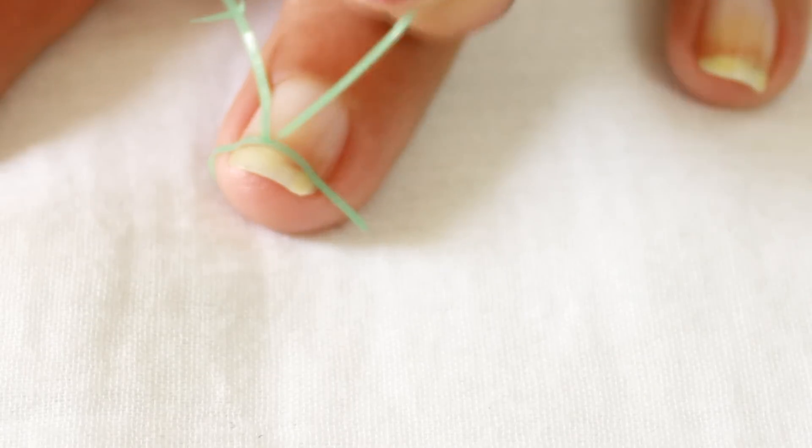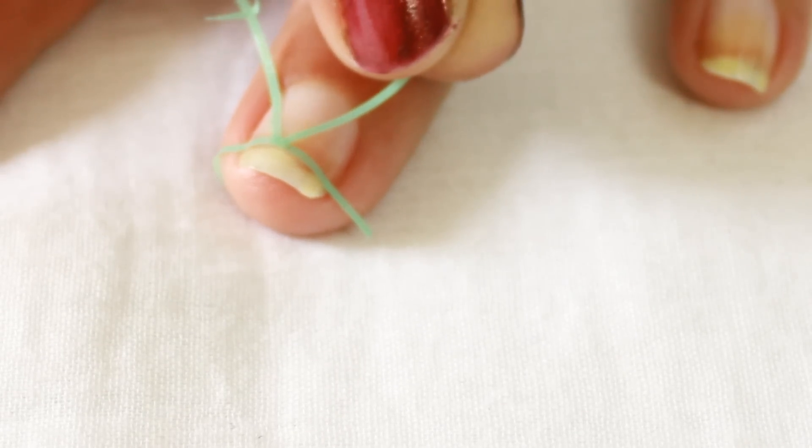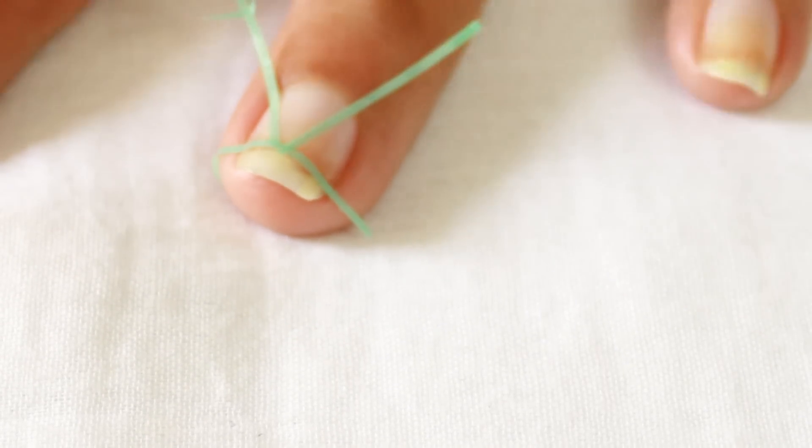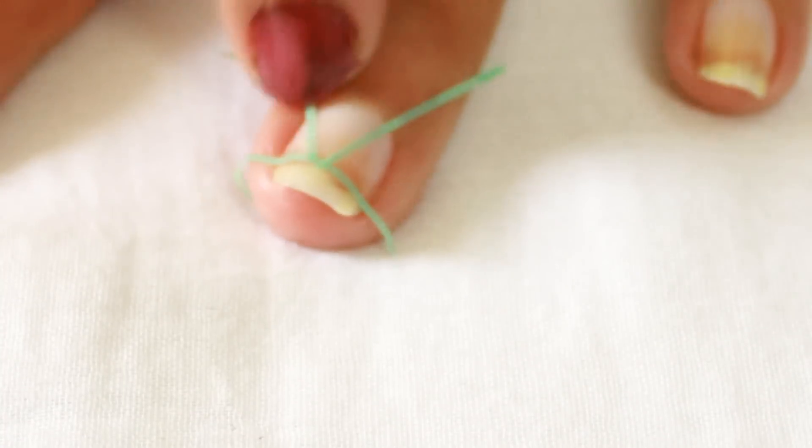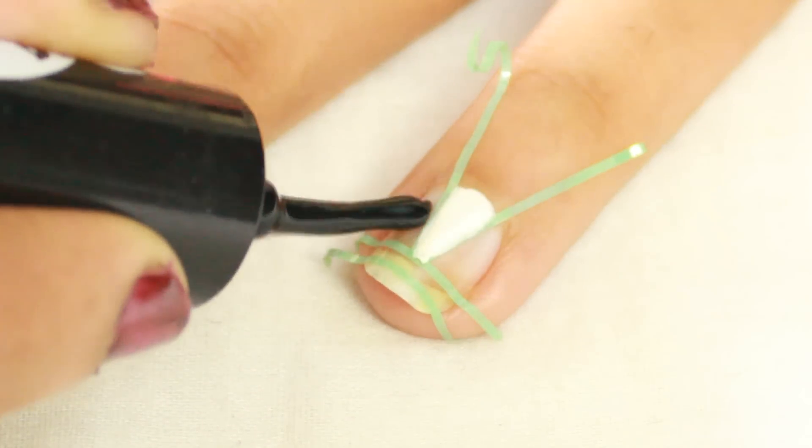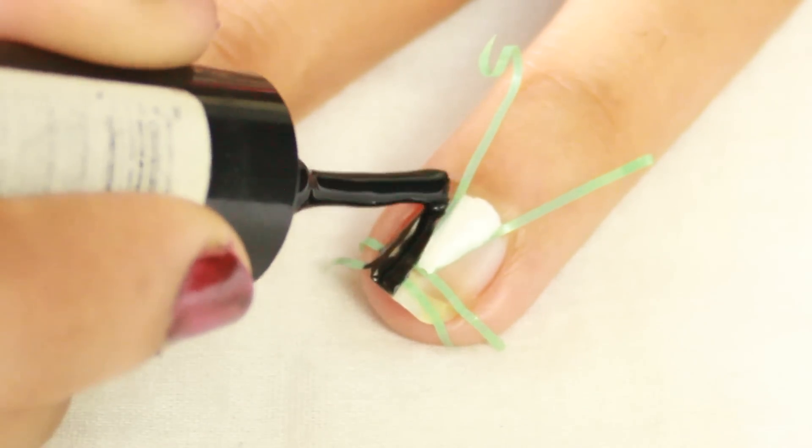Now apply the combination of black and white nail polish. I'm applying white inside the V and black outside.